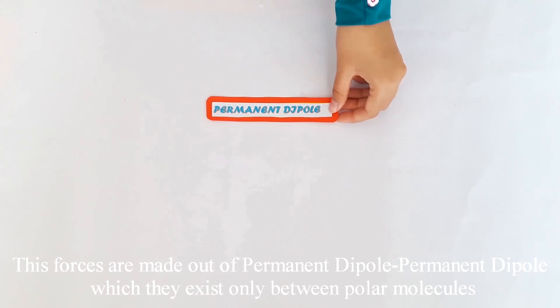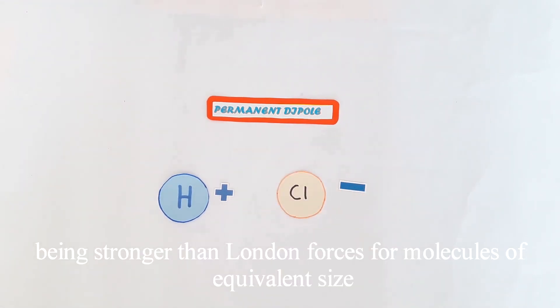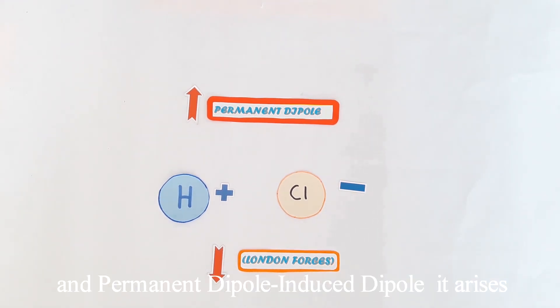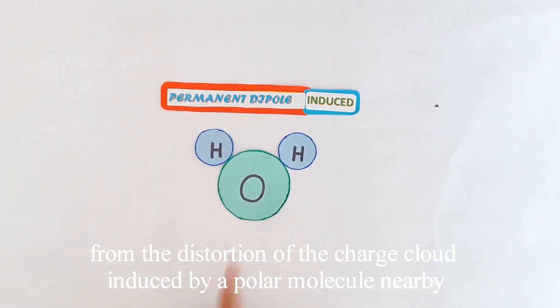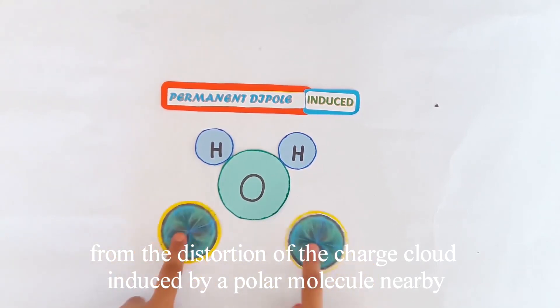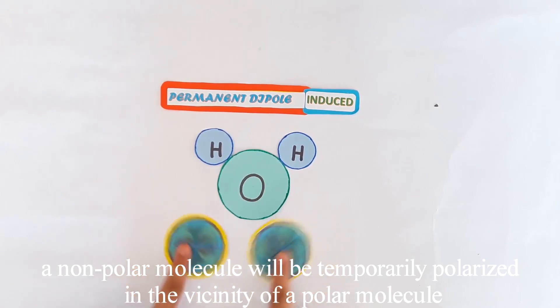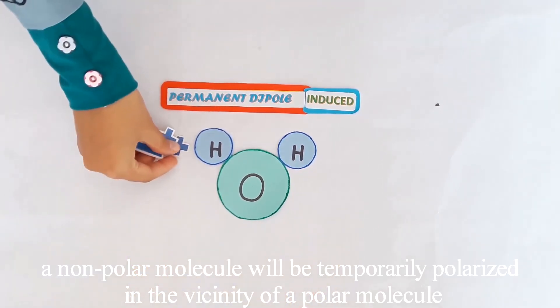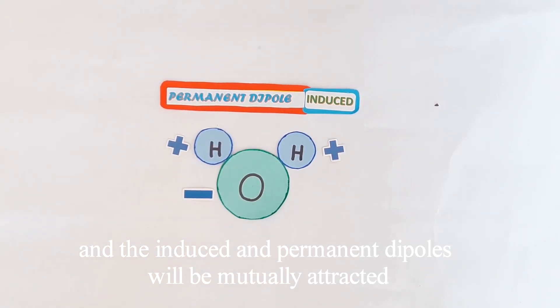These forces are made out of Permanent Dipole, Permanent Dipole, which they exist only between polar molecules, being stronger than London forces for molecules of equivalent size. And Permanent Dipole Induced Dipole, it arises from the distortion of the charge cloud induced by a polar molecule nearby. A non-polar molecule will be temporarily polarized in the vicinity of a polar molecule. And the induced and permanent dipole will be mutually attracted.